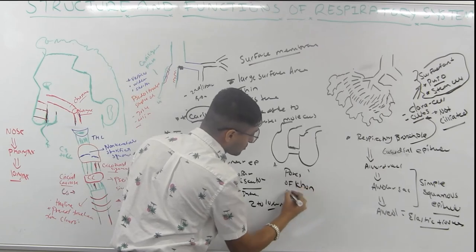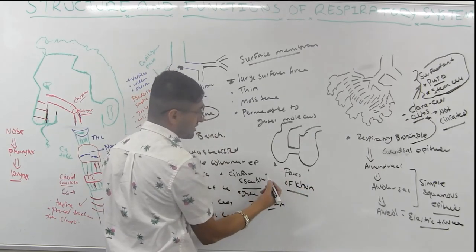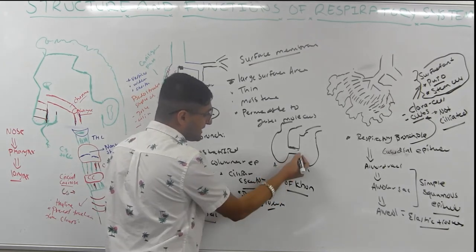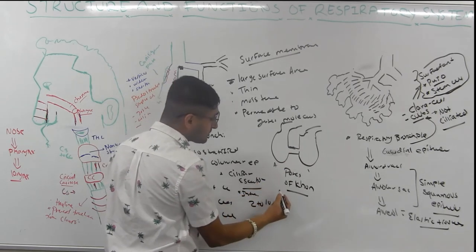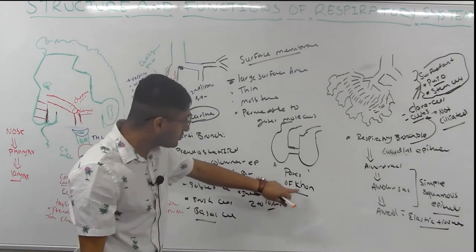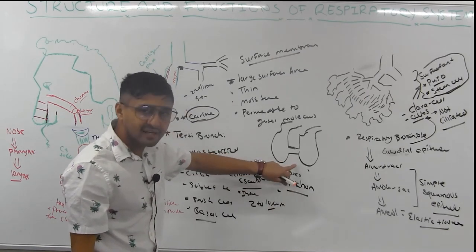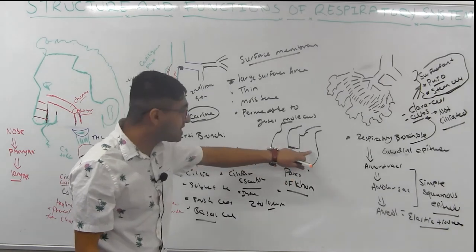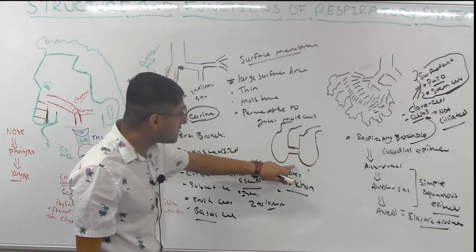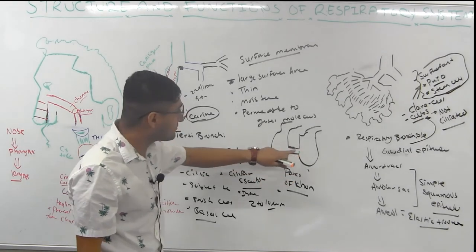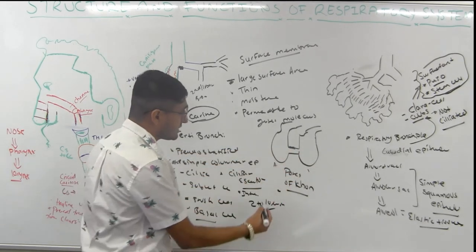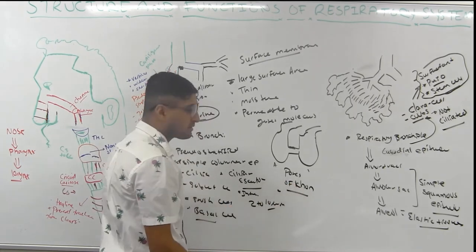There are also pores of Kohn, which interconnect all the alveoli. Alveolar macrophages can easily cross from one alveolus to another through these pores. However, this also means that disease can spread very quickly through the lungs compared to other organs, since the alveoli are all interconnected.